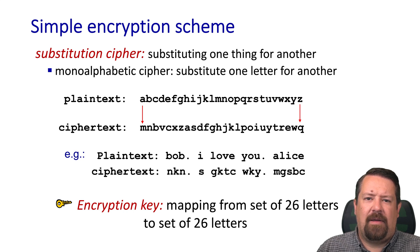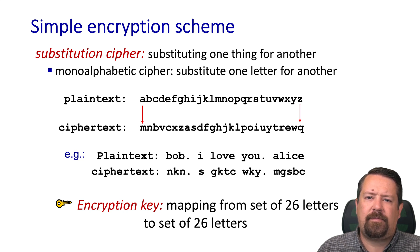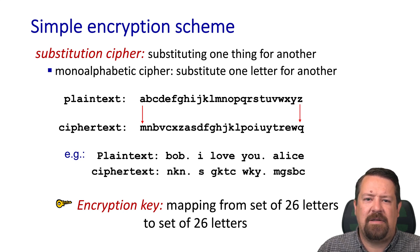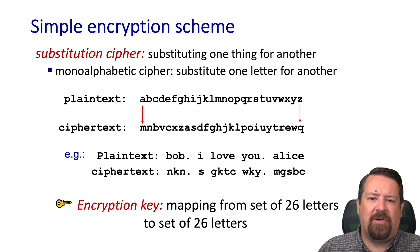Here's our substitution cipher. We have a plaintext, which is just the alphabet, and our ciphertext takes each letter and substitutes a different letter for it — it's one-to-one, meaning each letter maps to a different letter with no duplicates, so the substitution cipher is reversible. If we apply this mapping to a sentence — Alice says 'Bob, I love you. Signed, Alice' — the ciphertext is produced by substituting the letters one at a time: B changes to N, O changes to K, and so on. Our encryption key is just the mapping itself — the ciphertext alphabet.